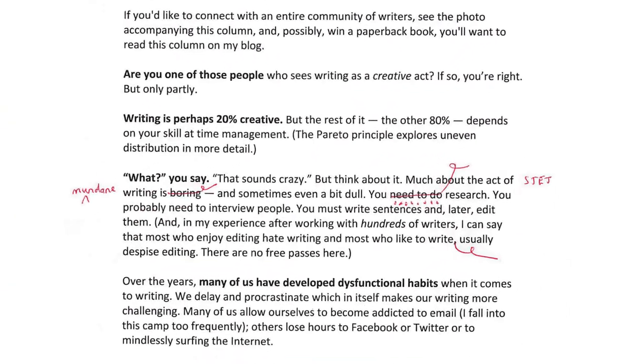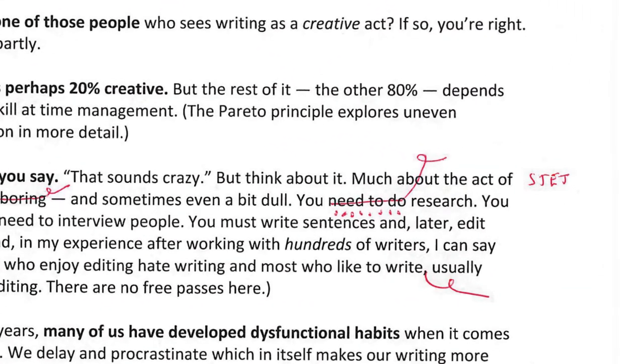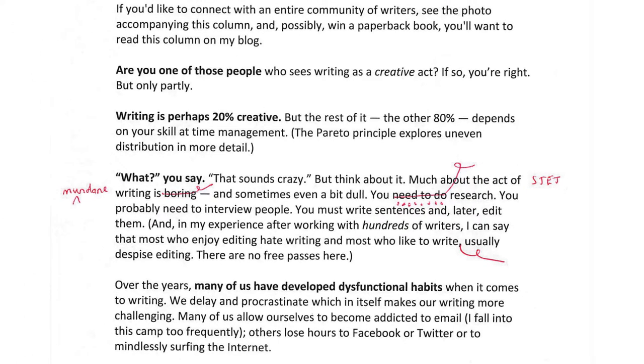Notice how the part where the STET applies also has little dots underneath it. Do you see how the editor has written in red ink all over this paragraph? But they've had second thoughts and after some reflection they've decided that the author's original text was okay. Because you can't erase red ink, they've written STET, meaning that the graphic artist, the typesetter, and even the author themselves should ignore those red markings and revert to the original text.